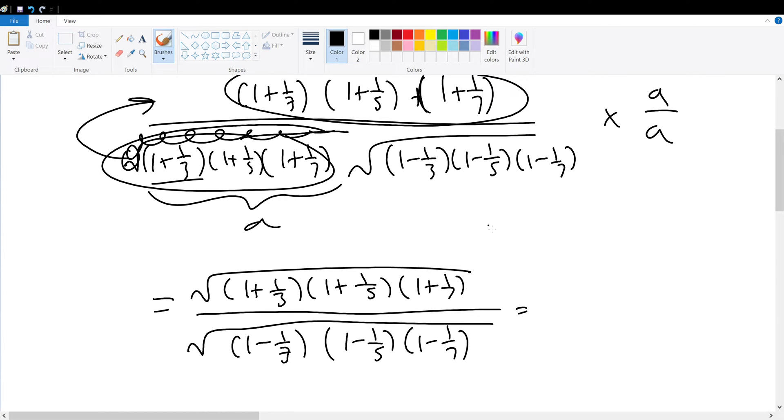Now the property says that square root of a over square root of b is equal to the square root of a over b. Therefore this becomes the square root of the conjugate over another. So to do that, what is it?